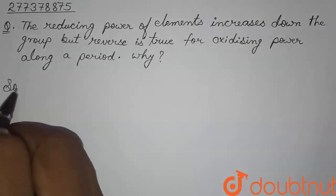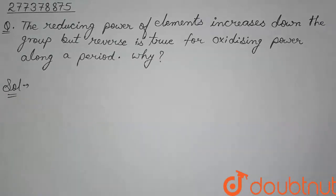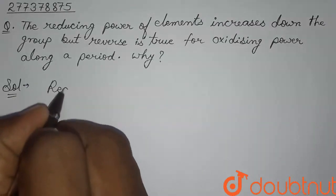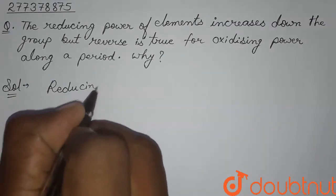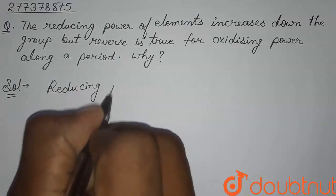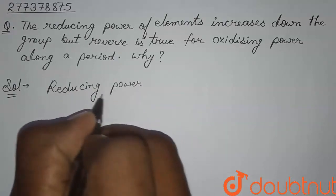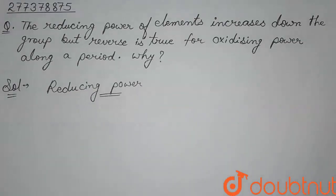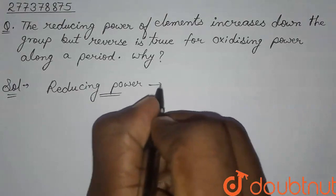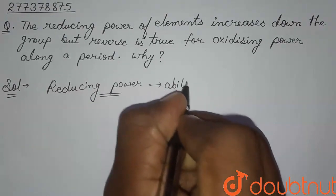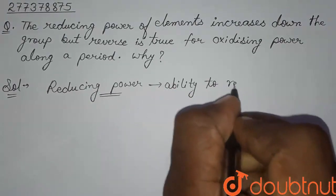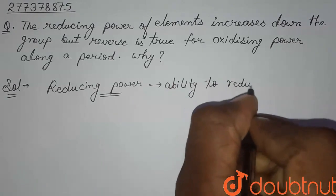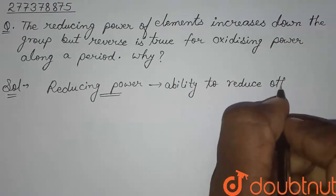So first we have to understand what reducing power is. Reducing power is the ability to reduce others — the ability to reduce other elements.